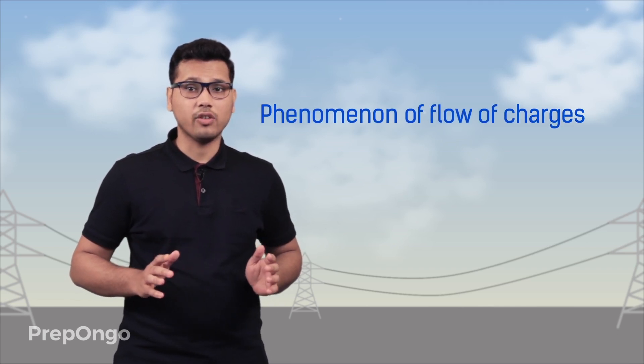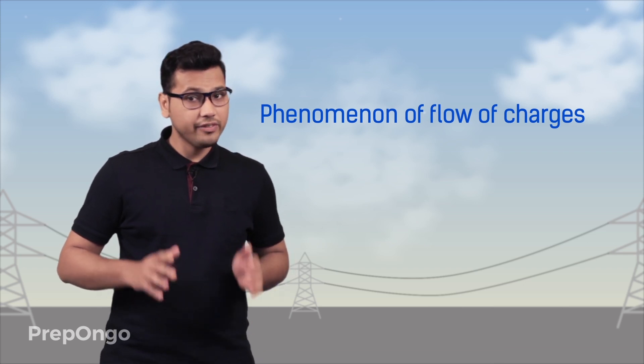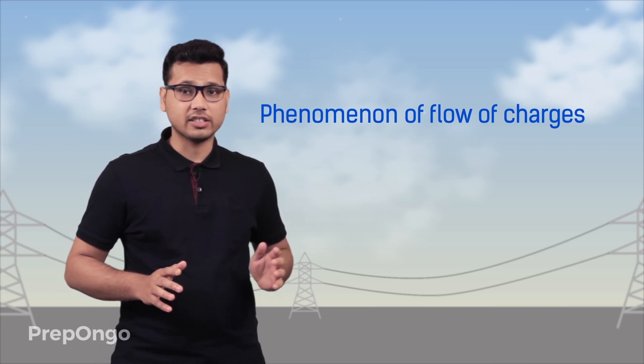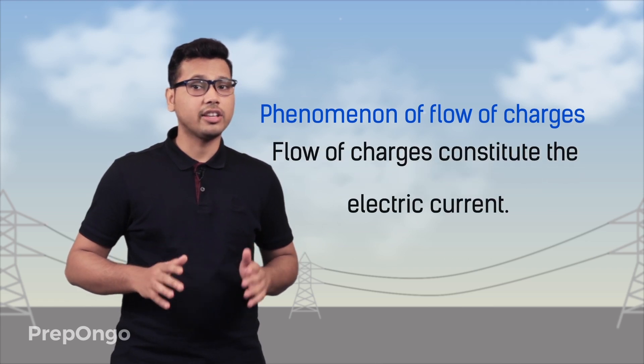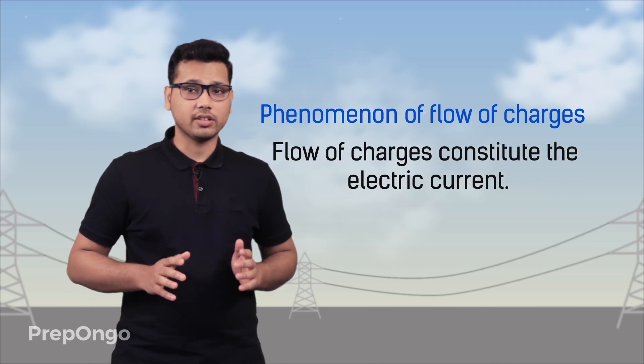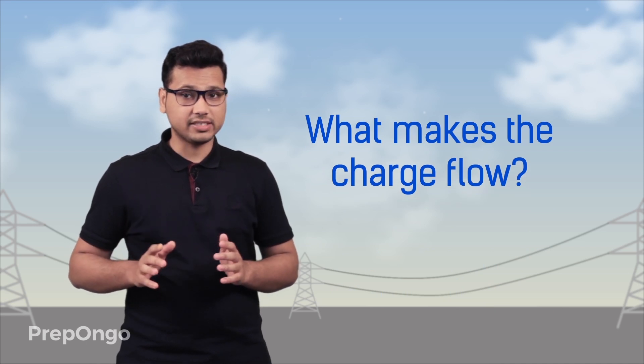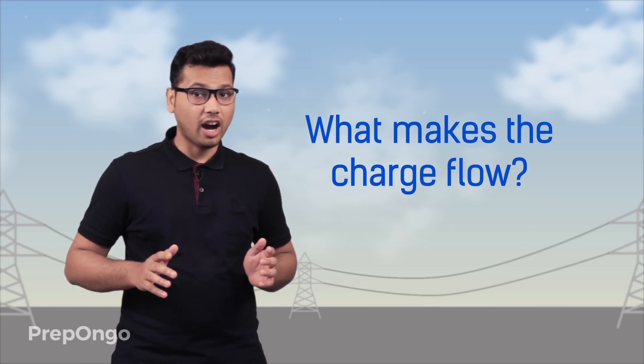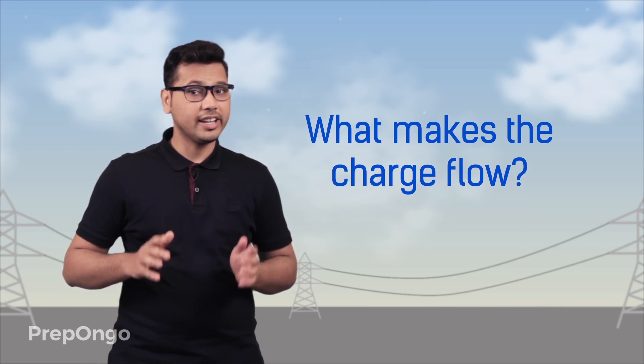Hello everyone. Till now we had seen the presence of charged particles and then we had seen the phenomena of flow of charges. Later on we had learned that this flow of charges constituted the electric current. But till now we don't understand what actually makes these charges flow — we don't know how electric current flows.